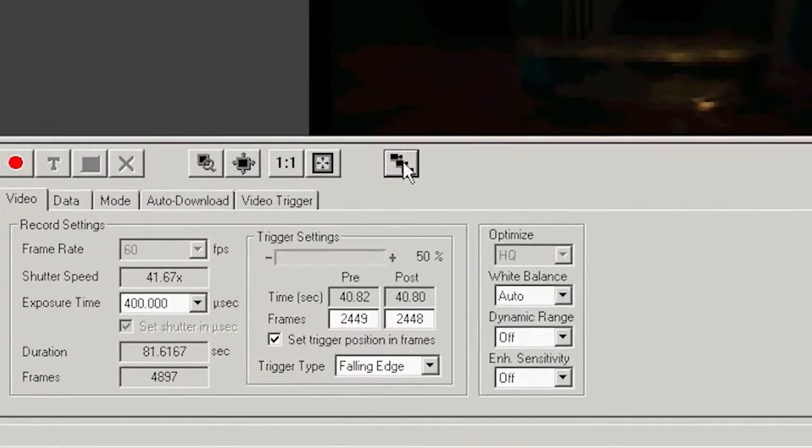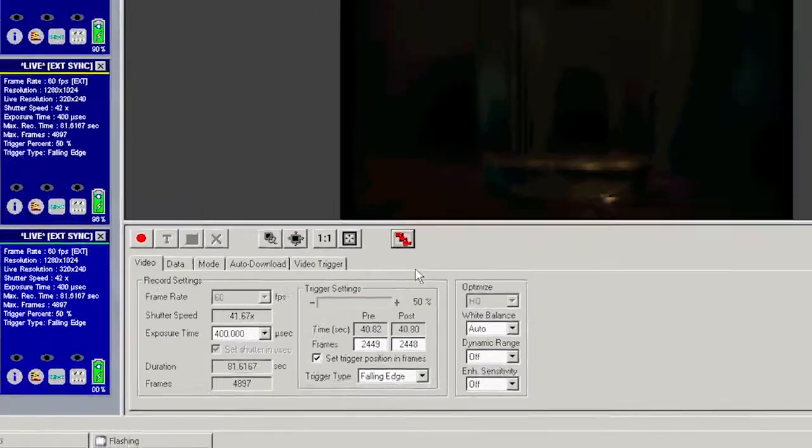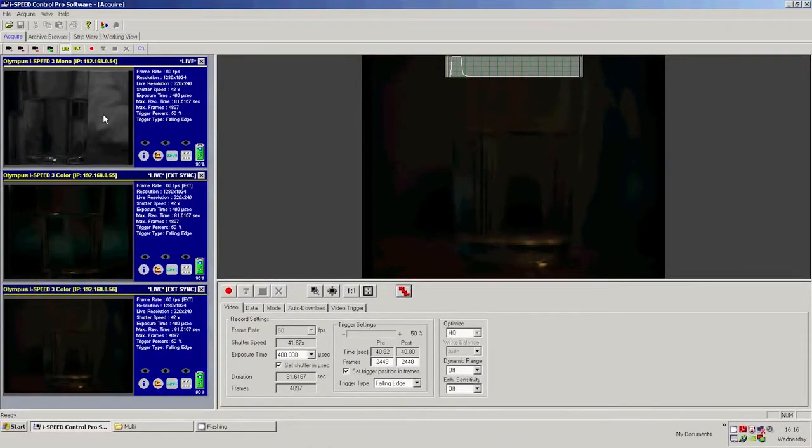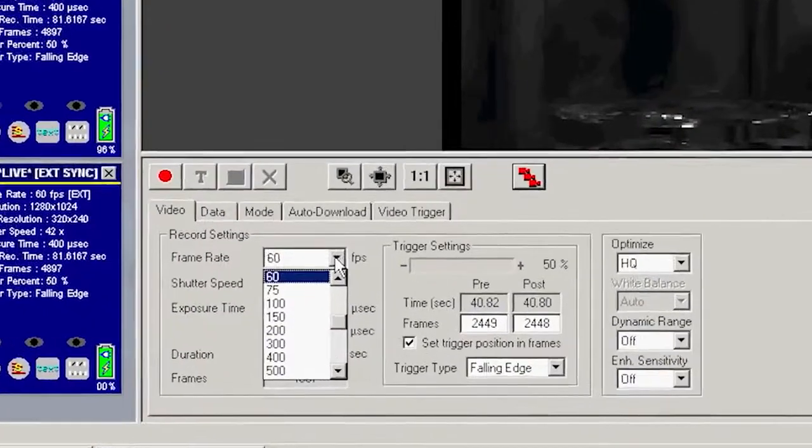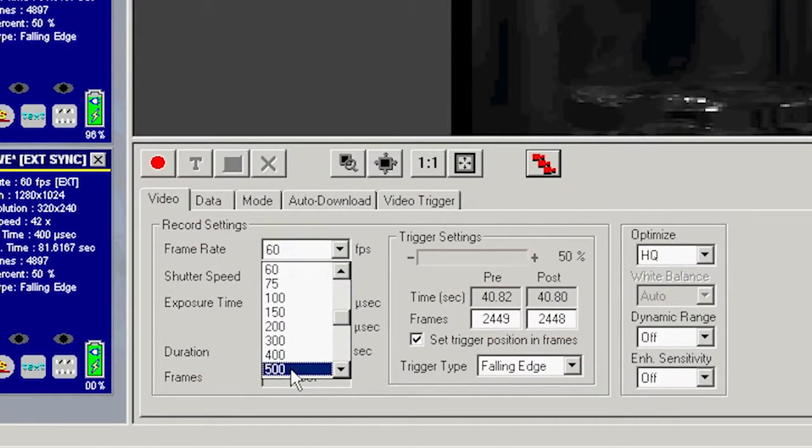I'm going to click on the button that locks the controls of all the cameras together. And then I'm going to move on the first camera, the master camera, to a frame speed of 500 frames a second.